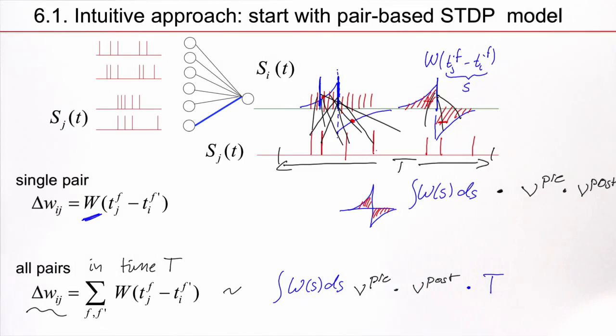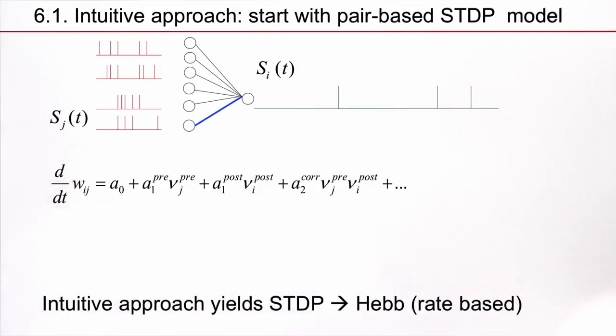So, as a final step, what we can do is to consider the change per time interval T. And so, I can consider delta W_ij divided by big T, and then you see that the big T has moved from the right-hand side to the left-hand side, and I have just this expression here.